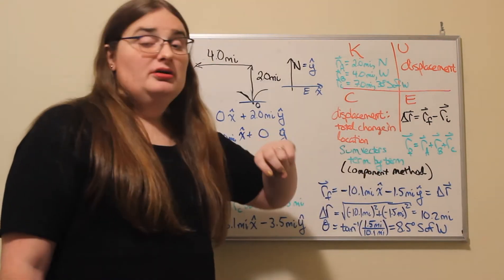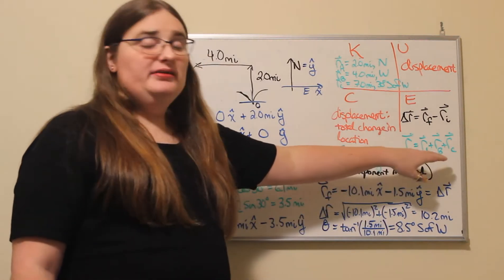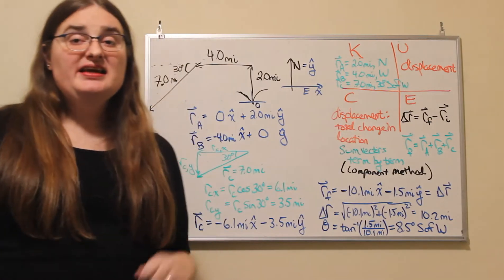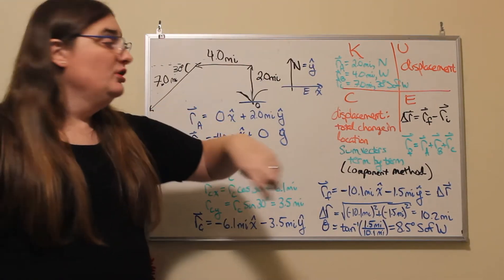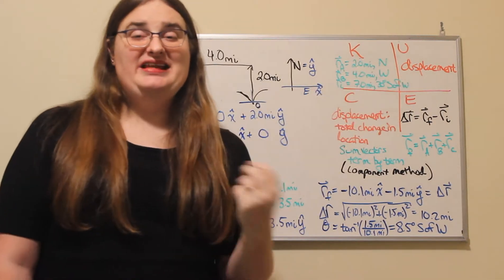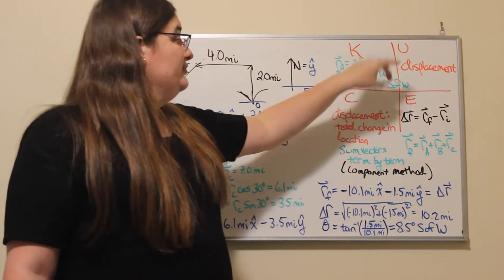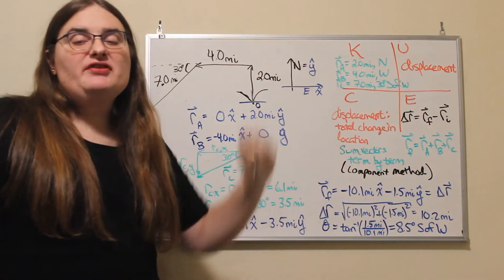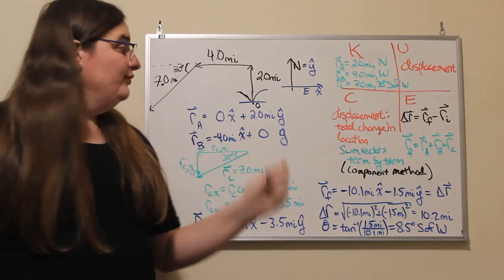So here we have three displacements. I'm going to call them rA, rB, and rC, and they're all vectors. The way that we were given them, we were given them essentially in a magnitude and an angle: two miles north, four miles west, seven miles 30 degrees south of west.